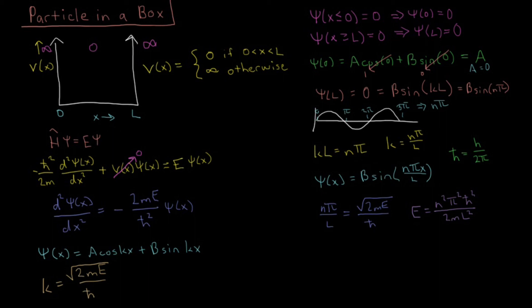then you should be able to convince yourself that if I substitute that in, I will get E equals H squared n squared over 8 mass times the width of the box squared.